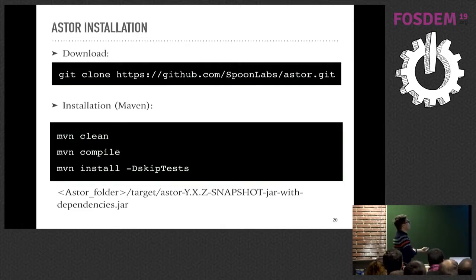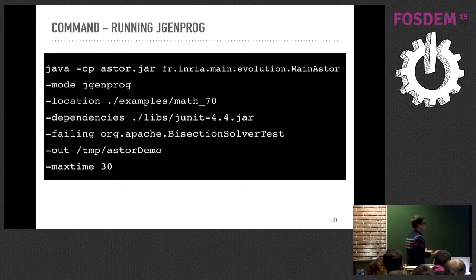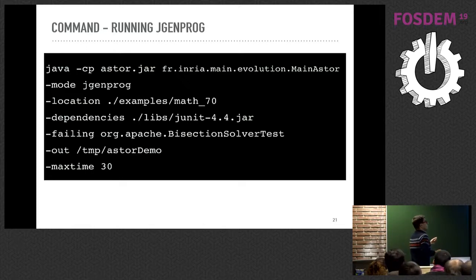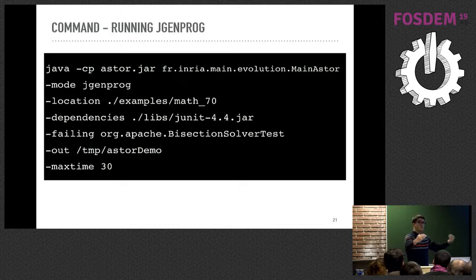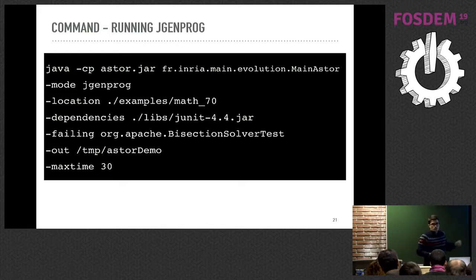Here we have the URL to clone ASTOR. In the example command you specify the mode, the location, and the dependencies. You can also specify the failing test case — we need at least one failing test case. ASTOR transforms the program to make that failing test case pass while keeping passing test cases still passing. There are also arguments like max time, which is the time we give ASTOR to search for a solution.